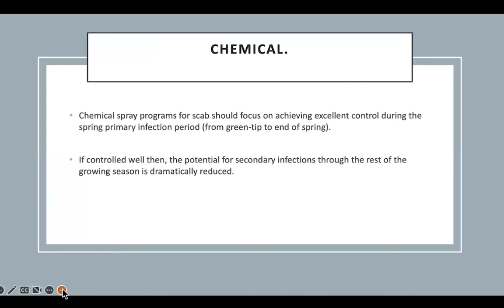The chemical spray program for scab focuses on getting the best possible control for primary infections, from green tip to the end of spring. If you have it controlled really well until now, the season starts to get easier — if you don't have any scab in your orchard and there is no scab nearby. However, scab spores can travel up to 10 kilometers in the air, meaning if your neighbor has black spot, you have to spray as well. Control really has to be through the whole district, not only on your farm.